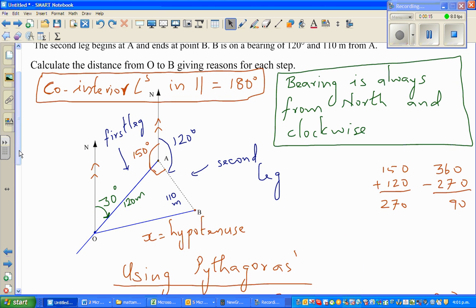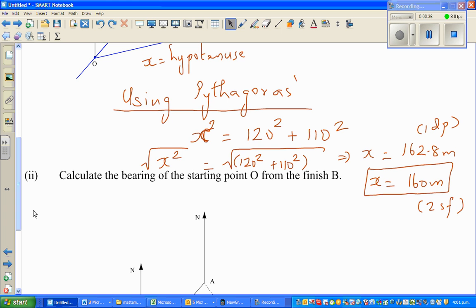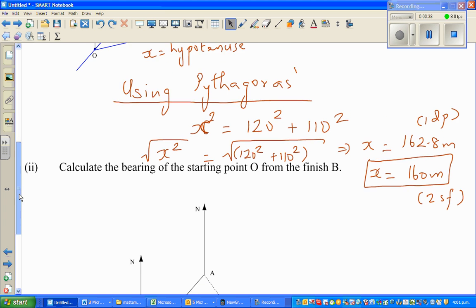We have to find the distance OB. OA is given as 120 meters and this is also given which is 110 meters. We figured out that this is a right angle triangle and then we used Pythagoras to find OB which is 160 in two significant figures.